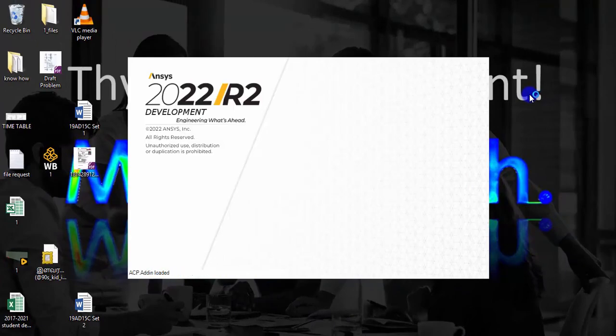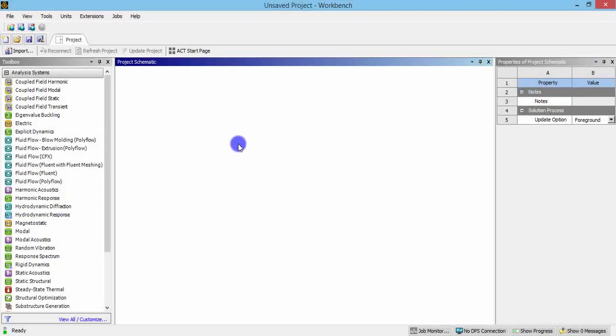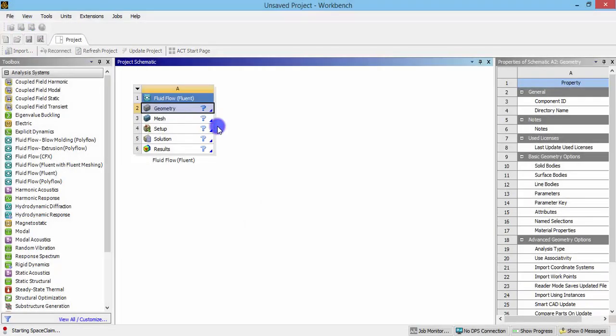Let us open ANSYS Workbench. Once the workbench window is open, just click and drag the fluid flow Fluent system into the workspace. Create a geometry using Space Claim or if you prefer, you can also create with Design Modeler.